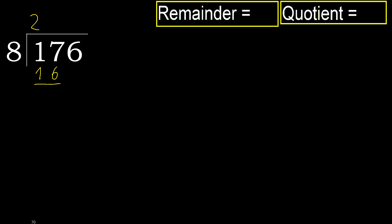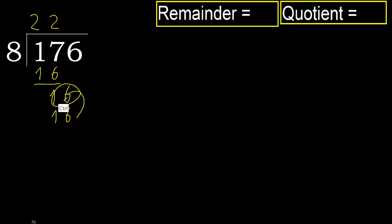17 minus 16 is 1. Next: bring down 6, giving 16. 8 multiply by 2 is 16. It is not greater. 16 minus 16 is 0.